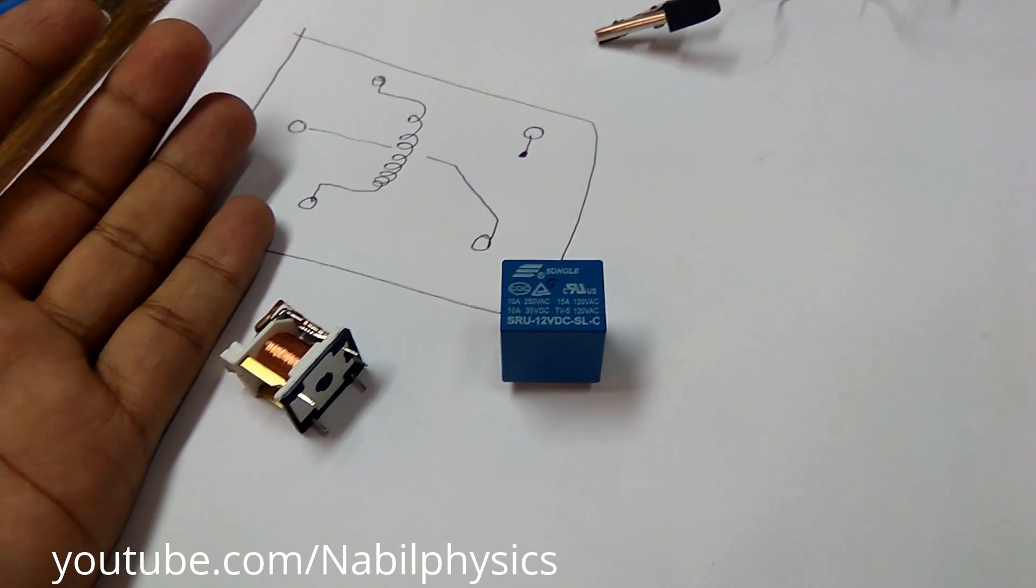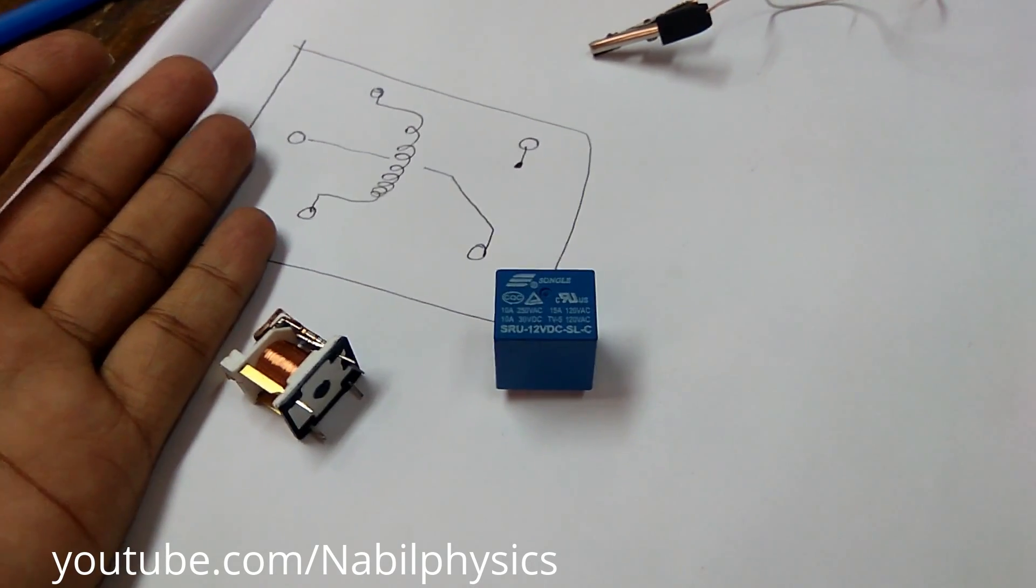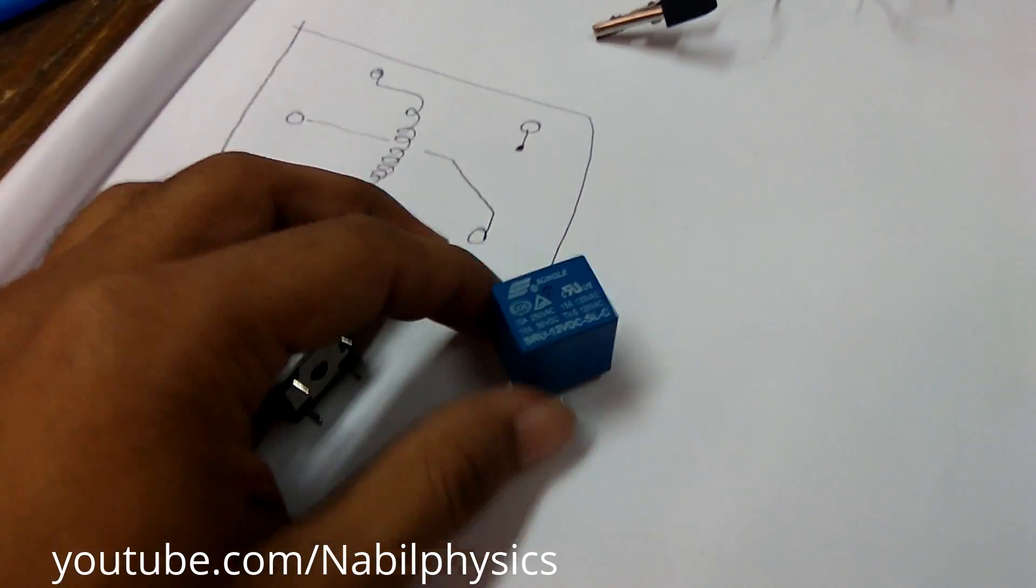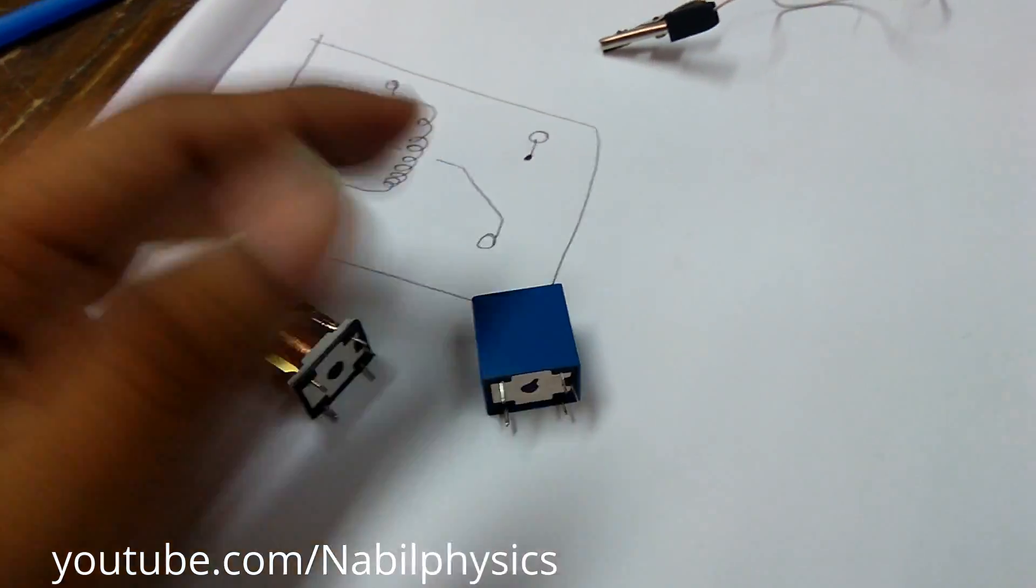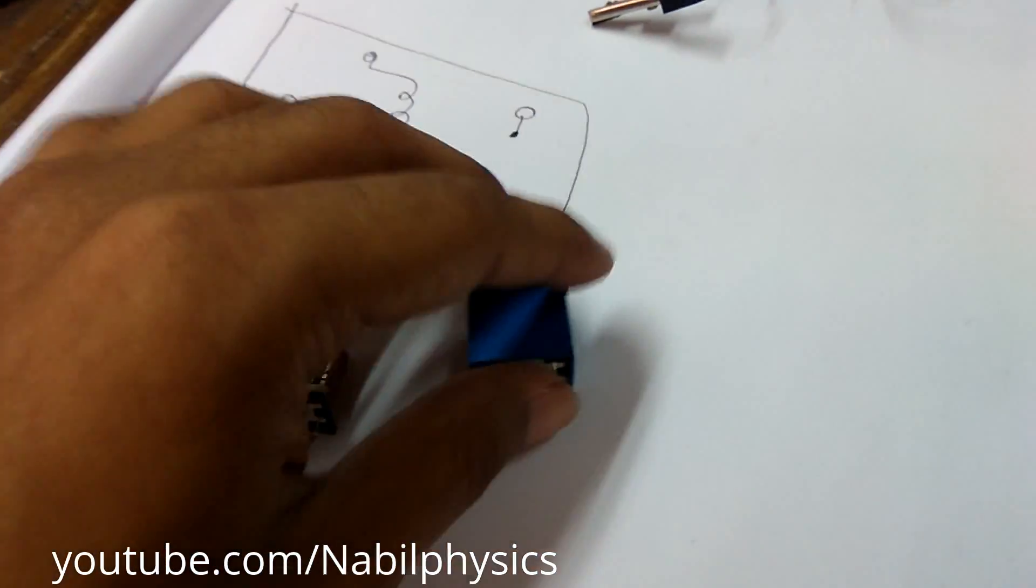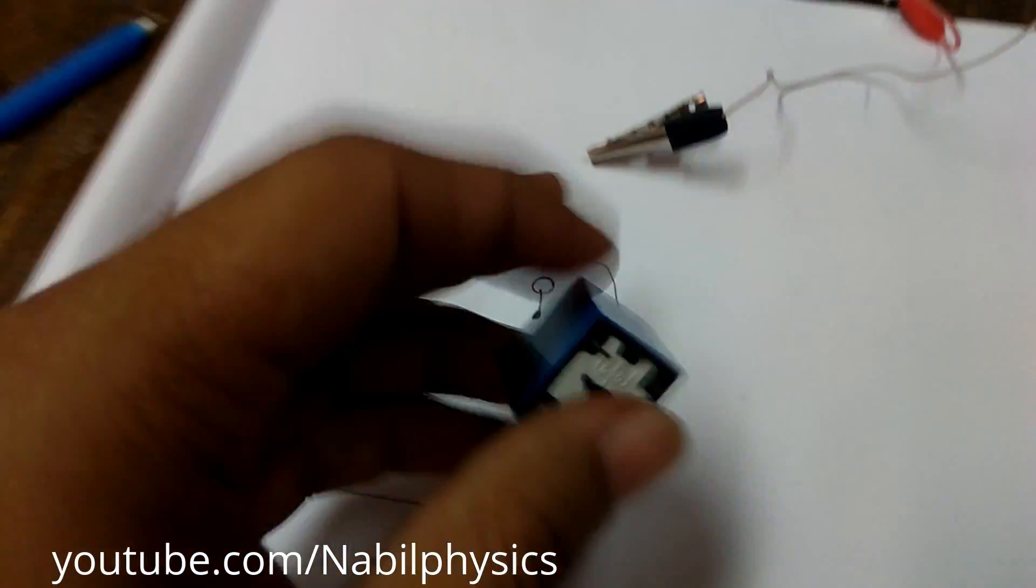Then how you can control a 220 volt load? You need a device which is called a relay. And this is a relay.